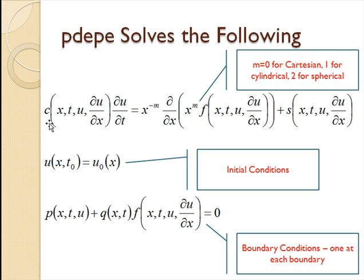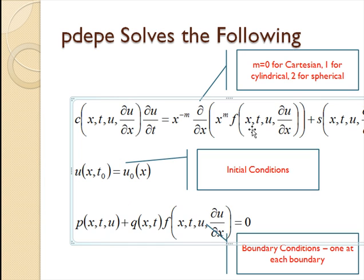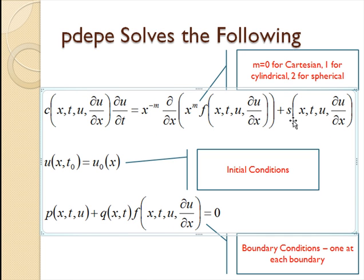Now what we need to do is give MATLAB this function c, the function f, and the function s, and also initial conditions and boundary conditions. The general boundary condition is that some function p of x and t and u plus some function q of x and t times our f has to be zero. So that's a general boundary condition. We have one on either edge, one on either boundary. And then a general initial condition, that is we specify u for all values of x. We just have to give all these functions to MATLAB and it'll do all the finite differencing and just solve it.